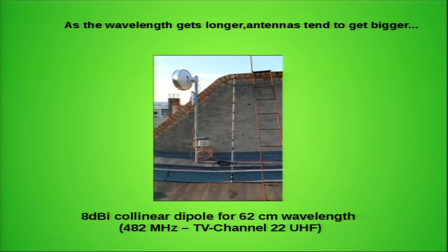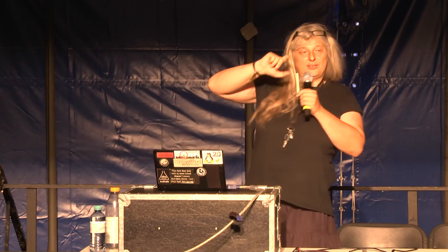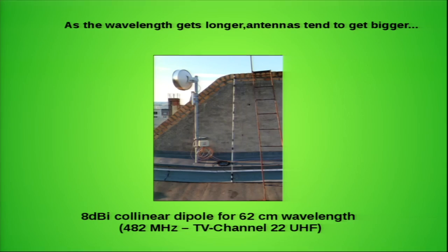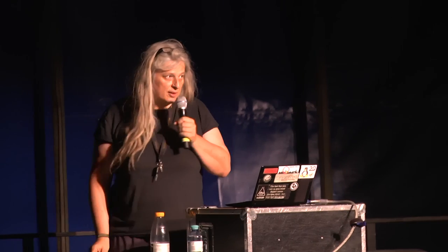This is a 2.4 gigahertz omnidirectional dipole antenna from a D-Link access point — it looks very tiny. These days manufacturers make longer antennas but basically there's just air inside; the radiating part is just a little bit higher in the plastic. On the other hand, here is the omni antenna for the 62 centimeter band that we use for our tests in Berlin. Quite a difference. In the picture you see an 8-element collinear dipole antenna that in theory gives a gain of 8 dBi.